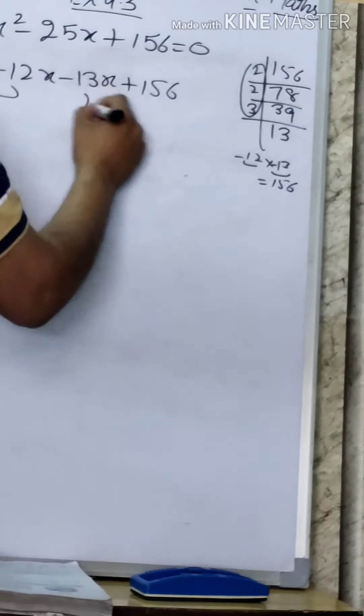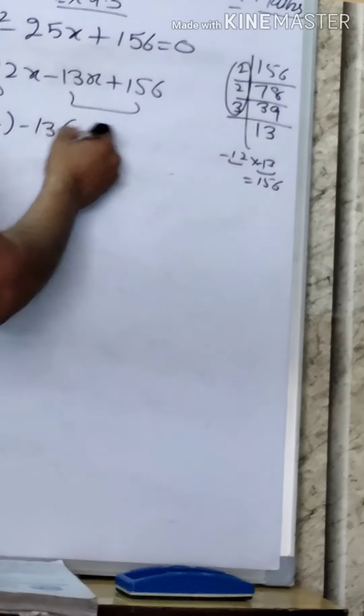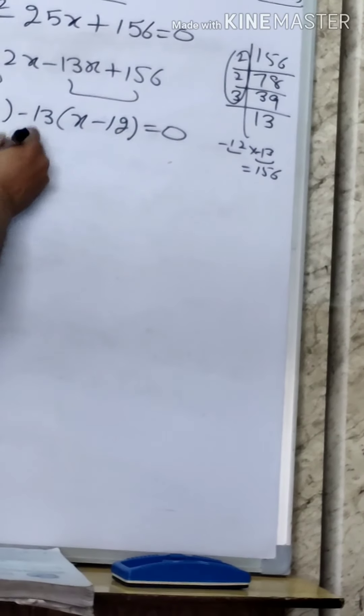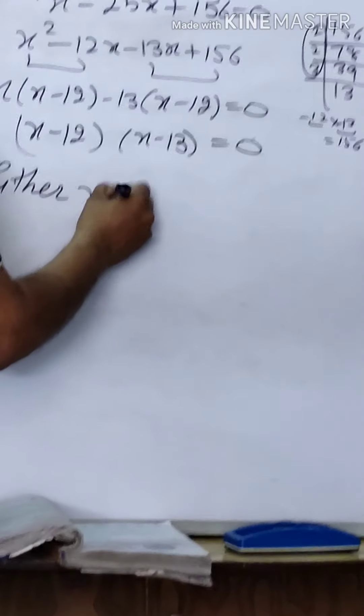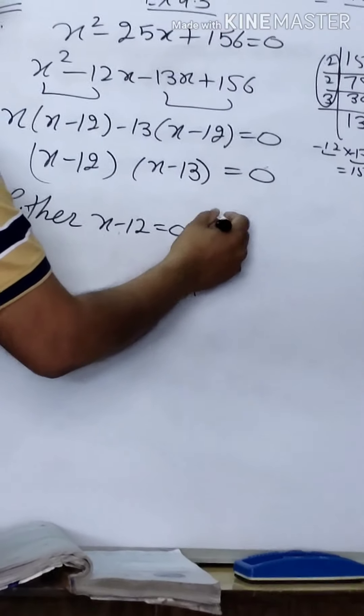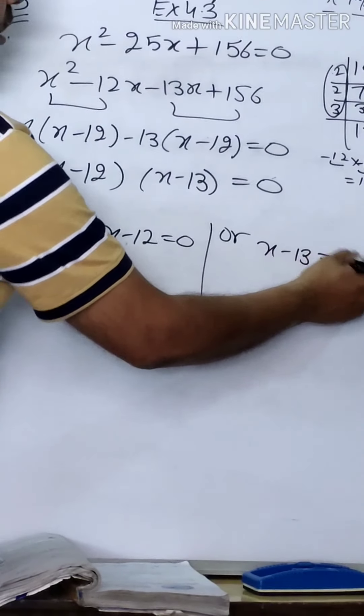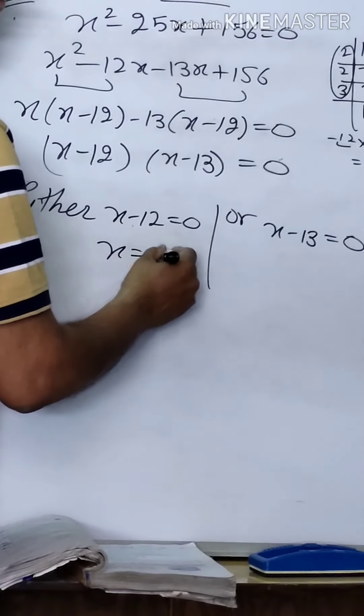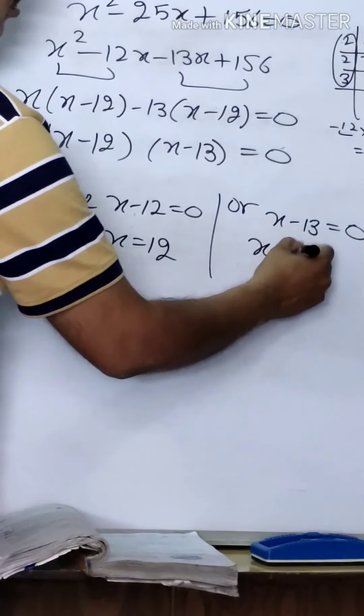So now: x common gives x(x - 12), and -13 common gives -13(x - 12). Therefore (x - 12)(x - 13) = 0. The product of two factors is 0, so either x - 12 = 0 or x - 13 = 0. Therefore x = 12 or x = 13.